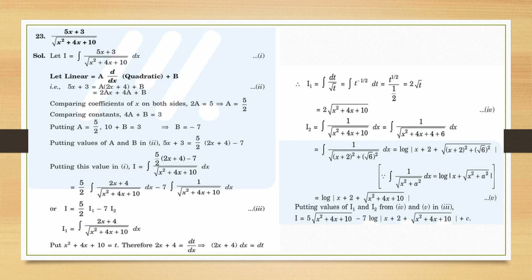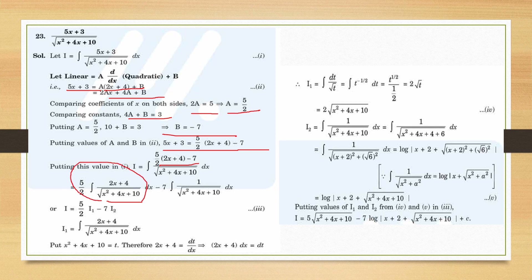Question 23: linear upon √(quadratic). Write linear = A·(d/dx of quadratic) + B. Find A = 5/2, B = −7. Split into two integrals. First: put denominator = t, derivative present, so dt/√t → 2√t. Second: 1/√(quadratic) — complete the square and apply the appropriate formula. Put back both integral values to get the final answer.